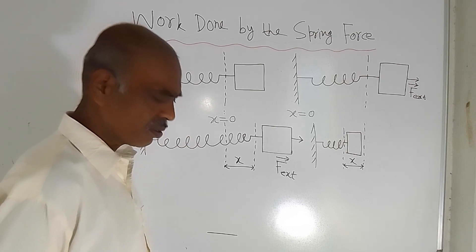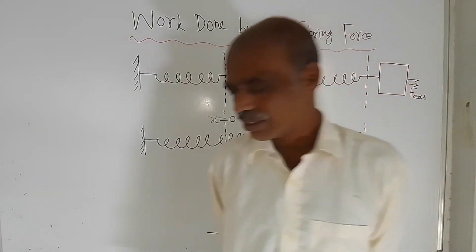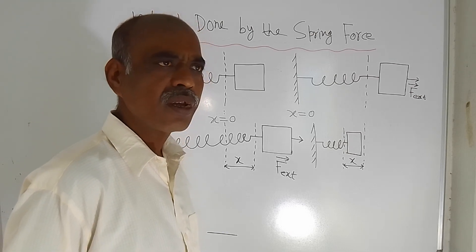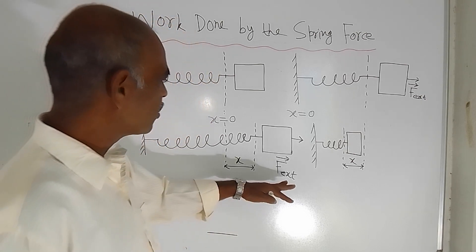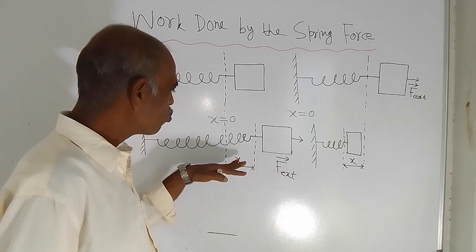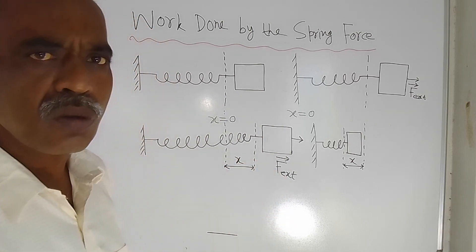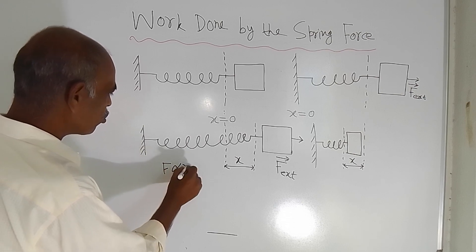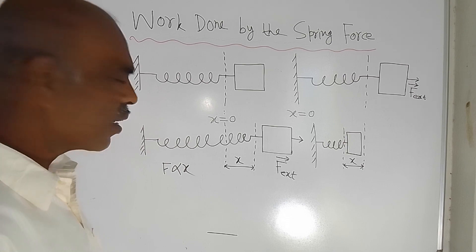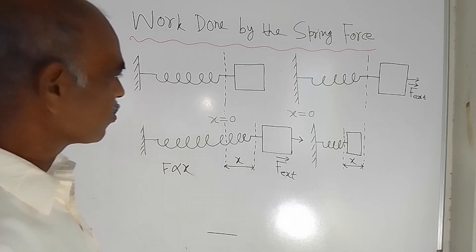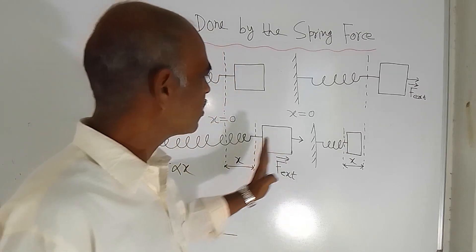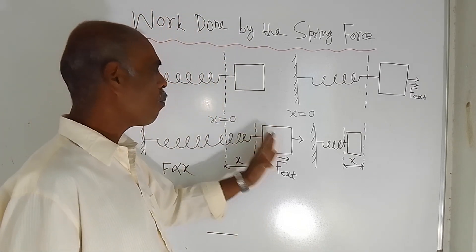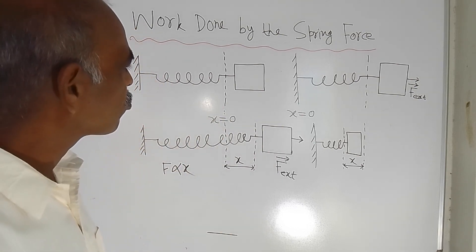If you do experiments — so many experiments were done using this spring, which is called a helical spring — after experimentation, scientists found that the force applied on the block is proportional to the elongation. So we can write F is directly proportional to X. And due to Newton's third law of motion, a force in the opposite direction will be acting on the block, and that force is called the restoring force.